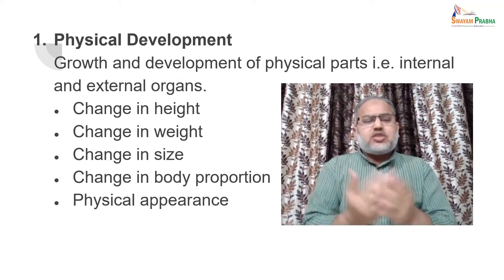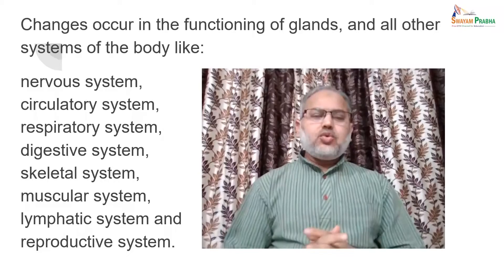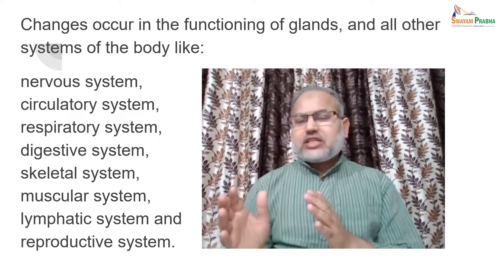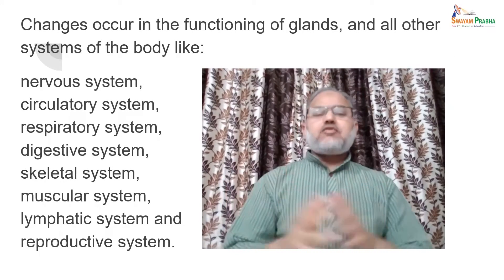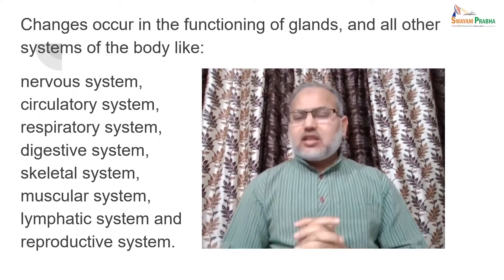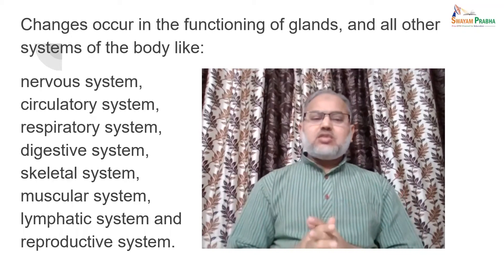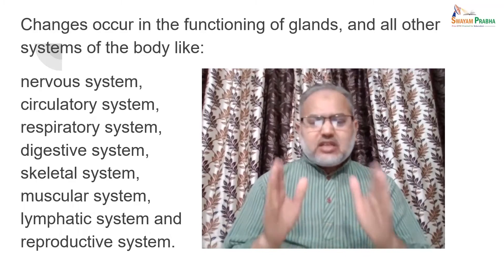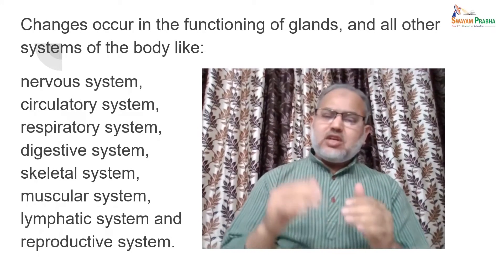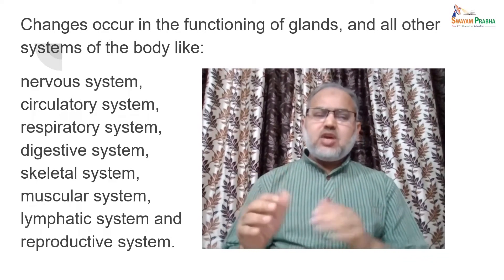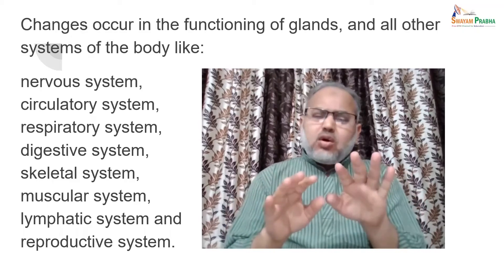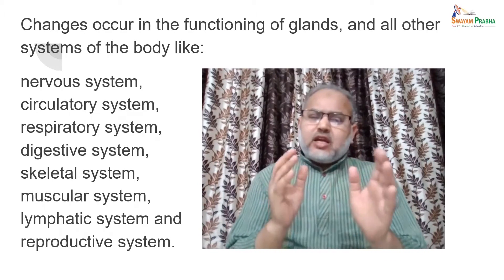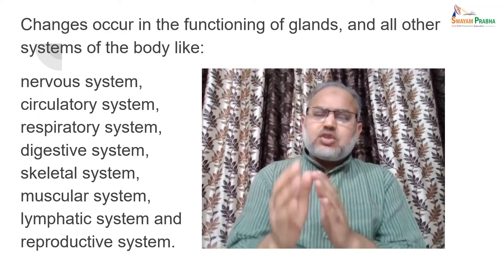Changes also occur in the functioning of glands and all other systems of the body — like the nervous system, circulatory system, respiratory system, digestive system, skeletal system, muscular system, lymphatic system, and reproductive system. All these systems grow and develop in terms of their functioning.